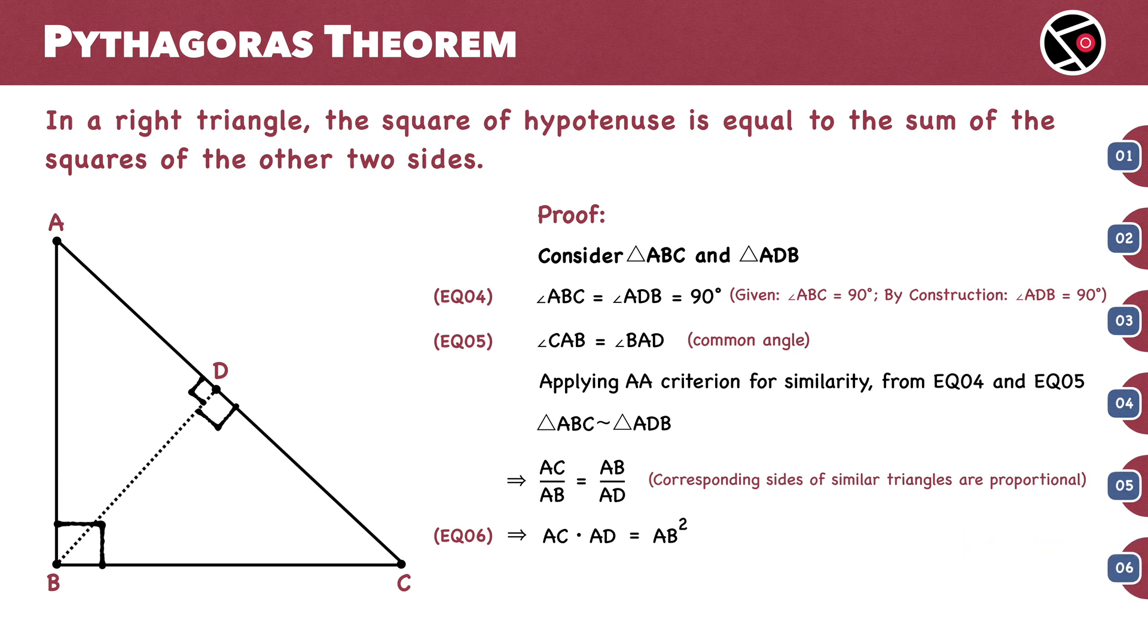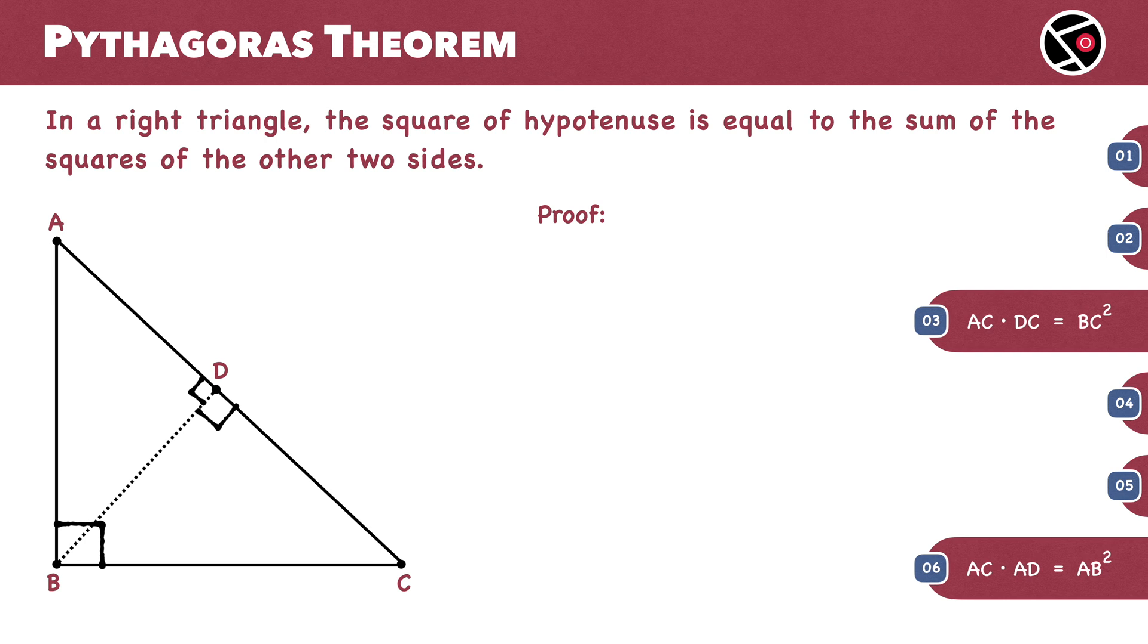Let's have another look at equations 3 and 6. Adding these two, we get AC times DC plus AC times AD equals BC squared plus AB squared. AC is common on the left-hand side. DC plus AD equals AC.